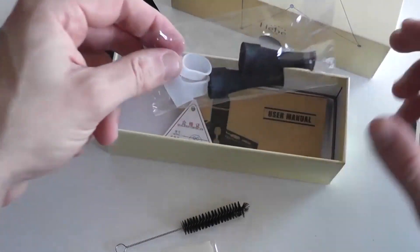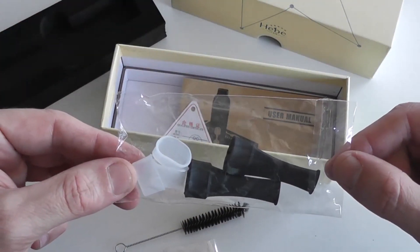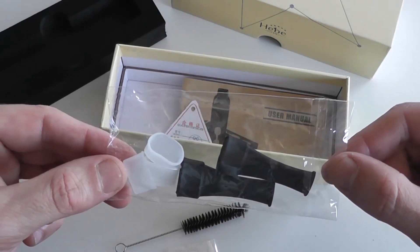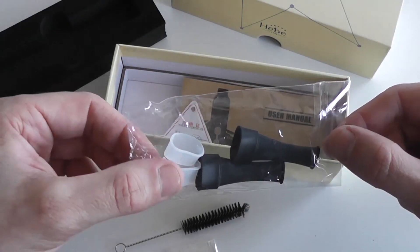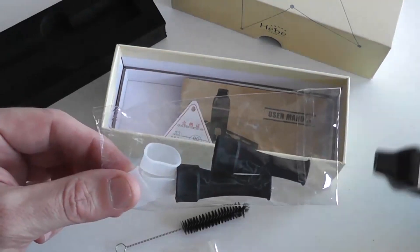2 black rubber mouthpiece extensions to help cool the vapor, and 3 silicone mouthpiece covers if you just want to use the original mouthpiece without the extensions.